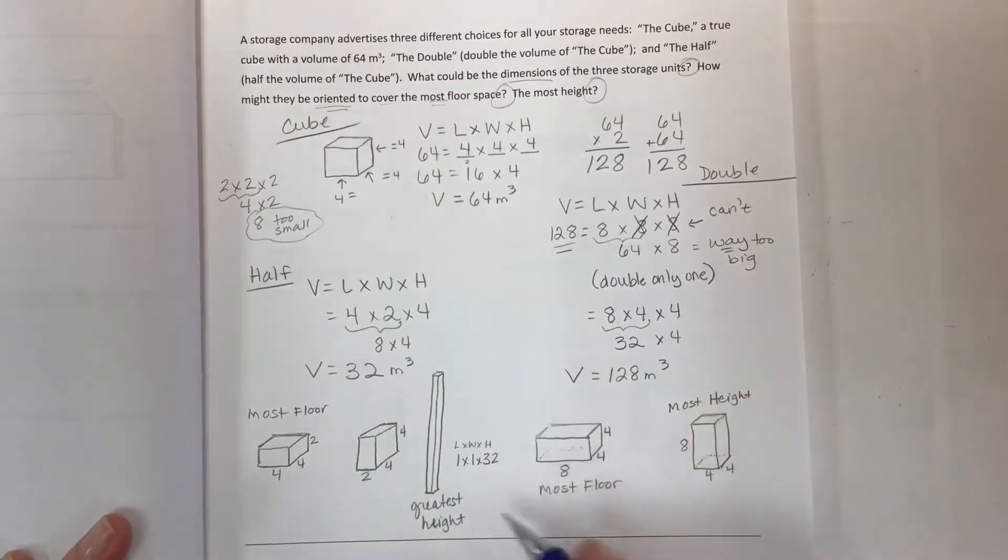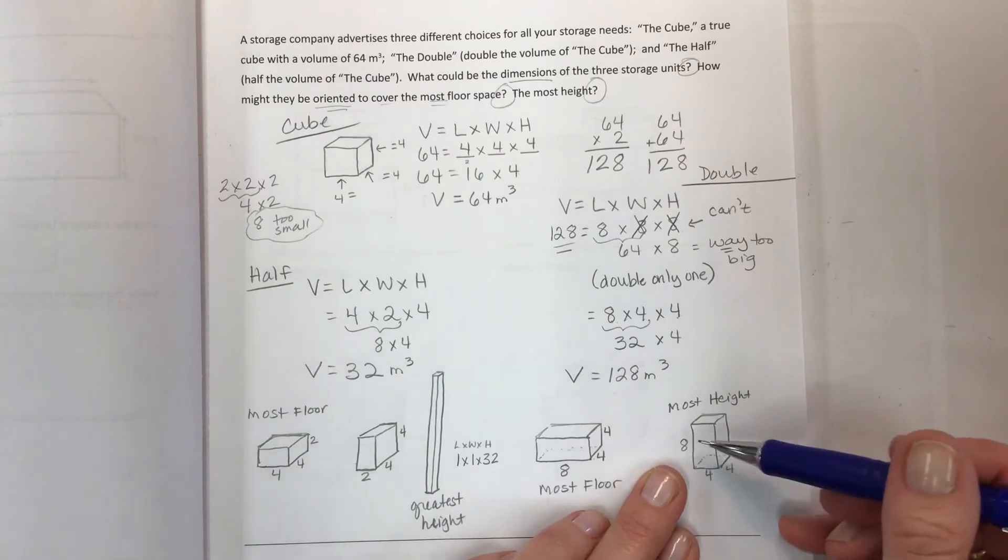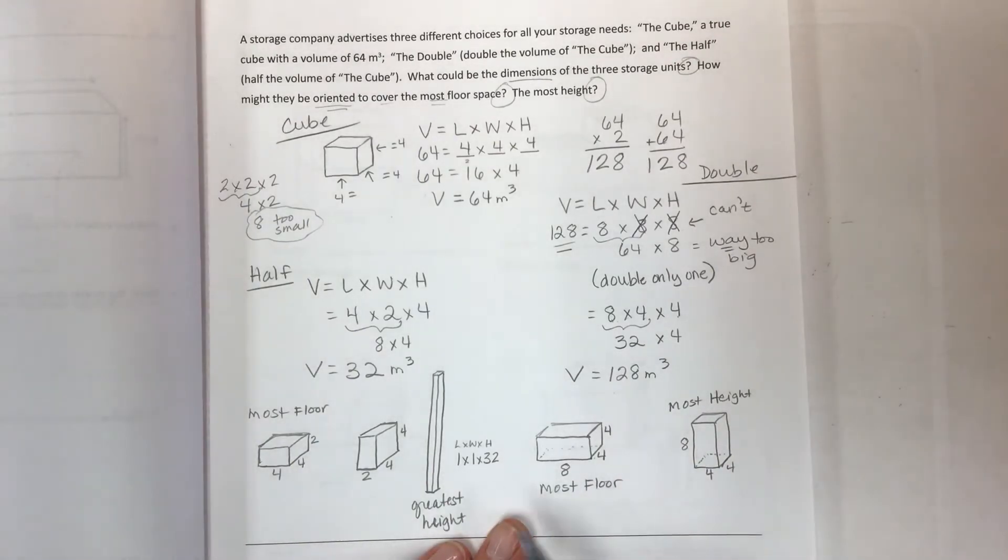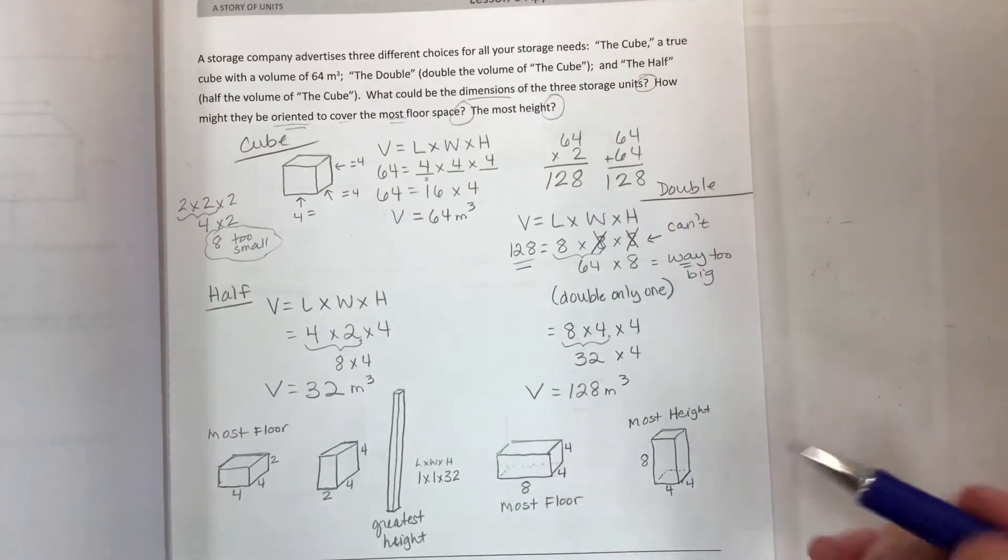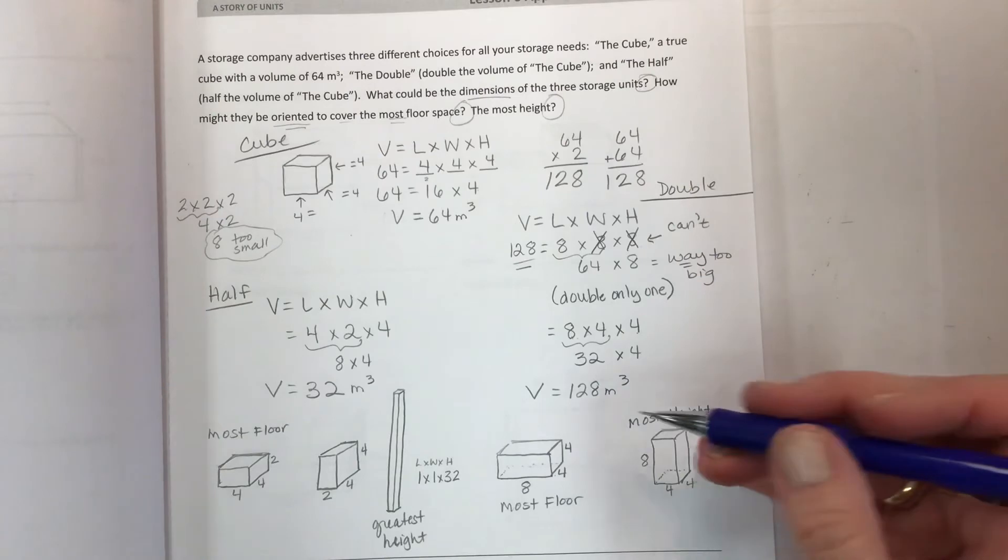Same thing over here - this is the most height using 8 as your factor. But what if I wanted to use 128 and store something super tall? Yes, you can do that. You can have 1 by 1 by 128.